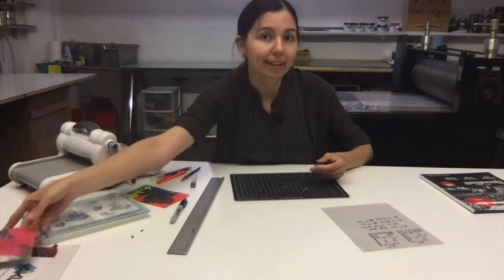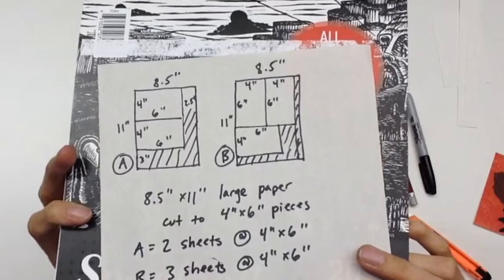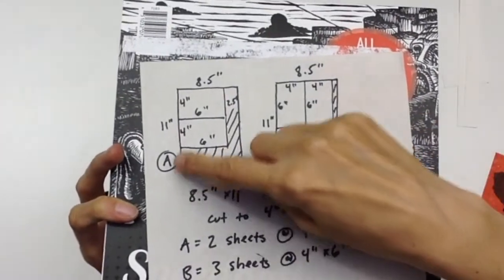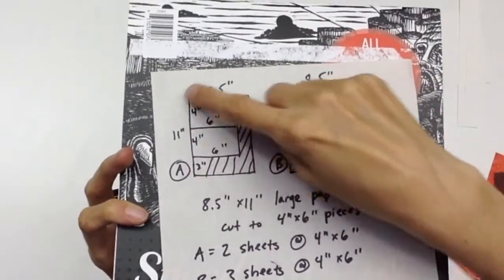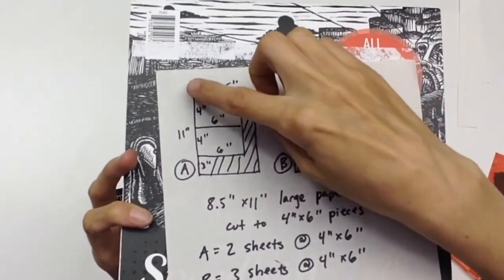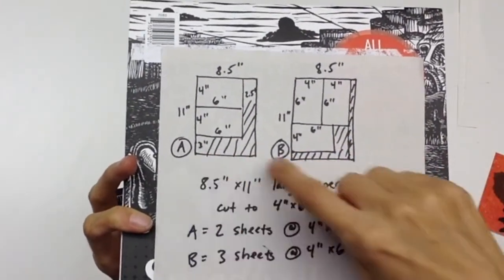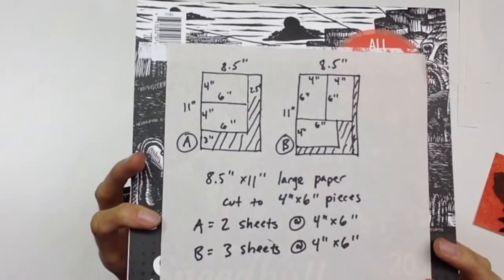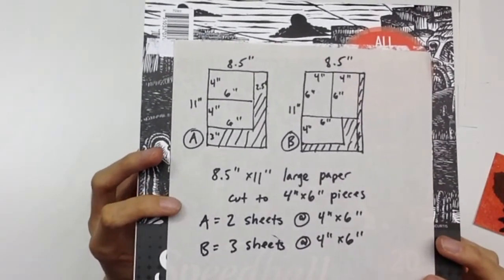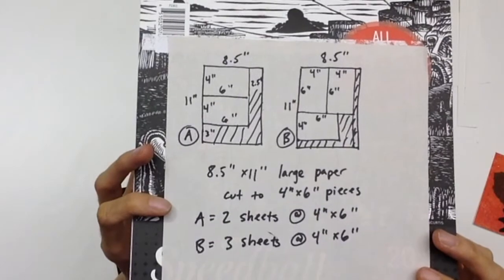The first step in doing that is figuring out your maximum paper usage. To figure out the paper usage, I drew out the dimension of the main paper, which is 8.5 inches wide by 11 inches tall. And I did two different versions, A and B, to see which is going to give me the best or the highest number of cut sheets of 4 by 6 inch paper.